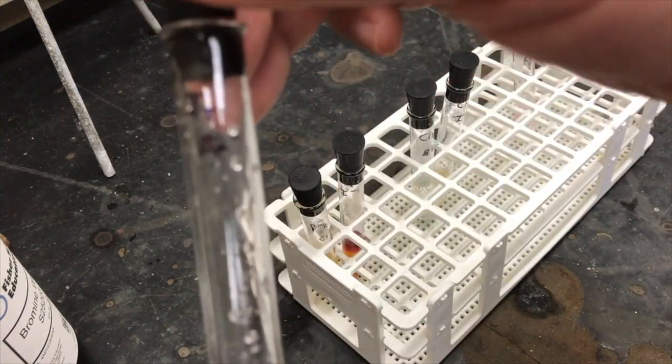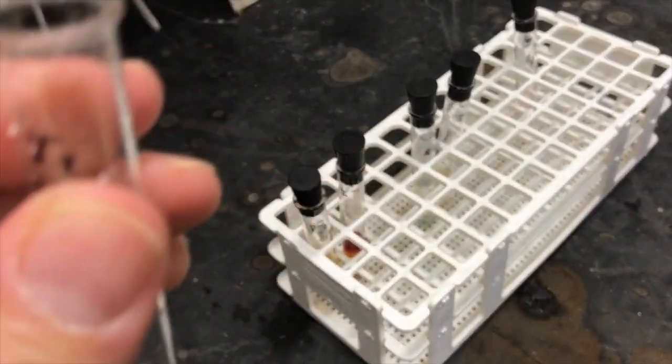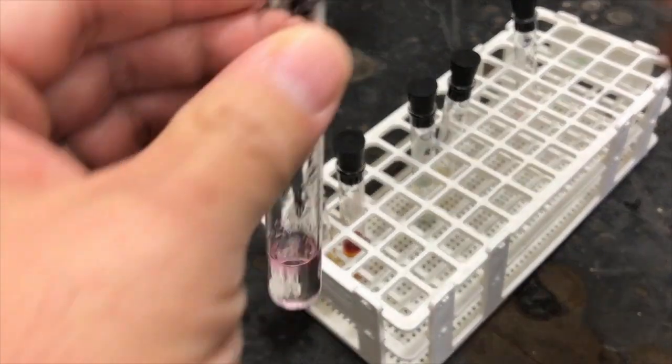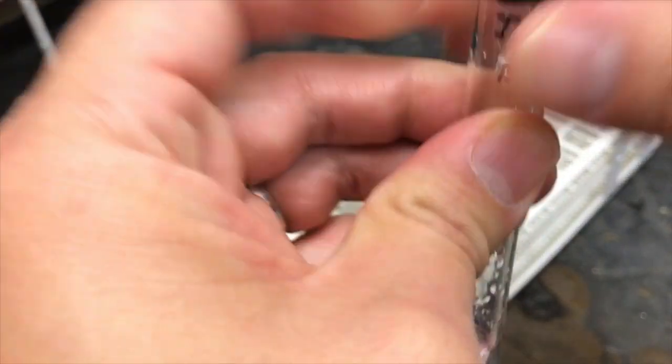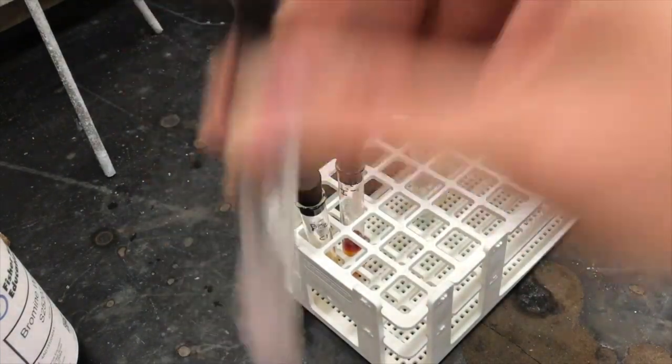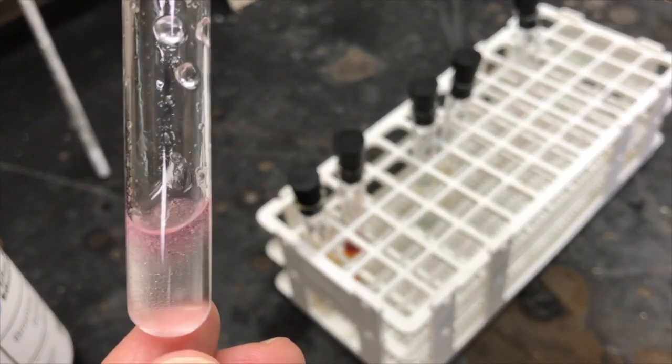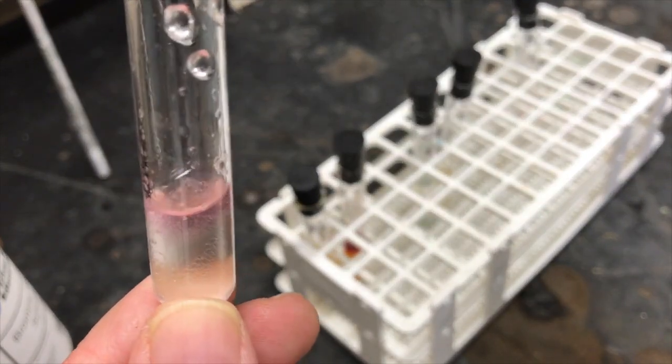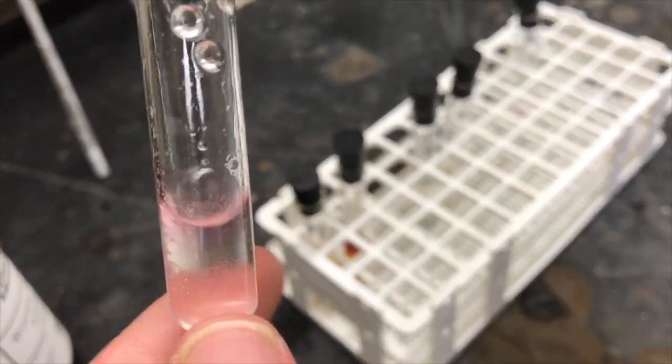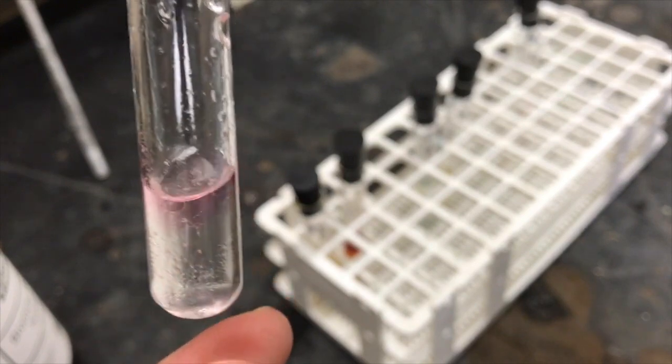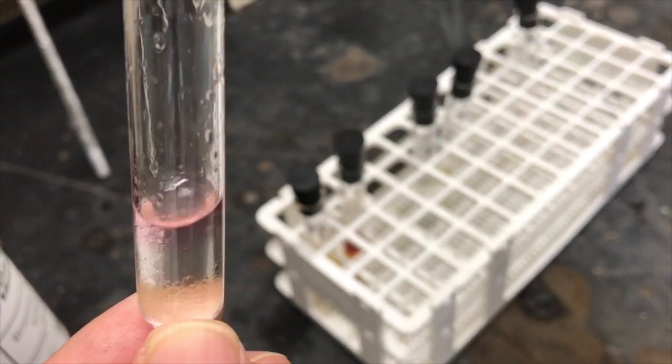This next tube is iodine and I'm going to add bromide to it. And there is essentially no change. The top layer was pink to begin with and it's pink now. And the bottom layer was sort of yellowish yellow clear and it's still kind of sort of yellow clear so basically no change.